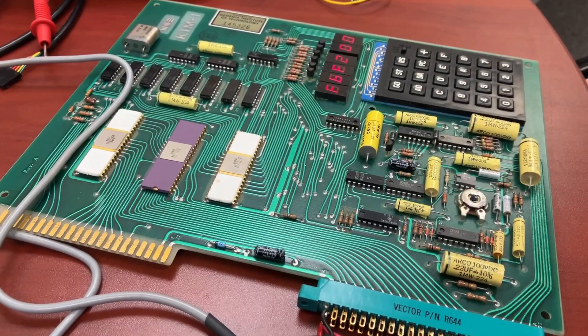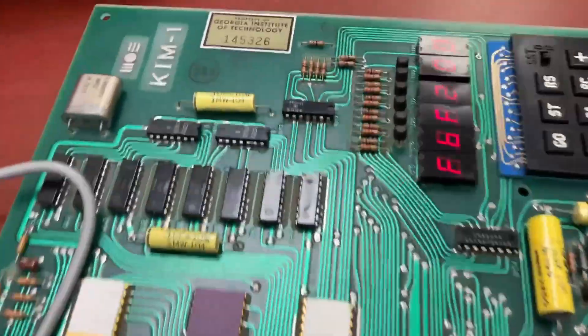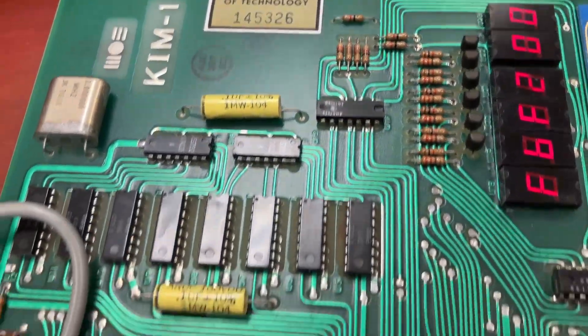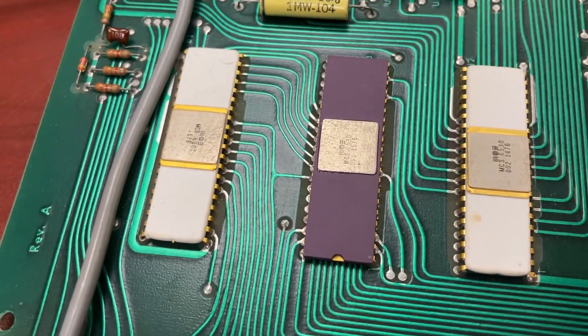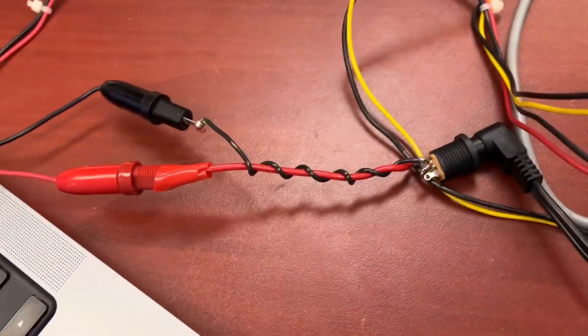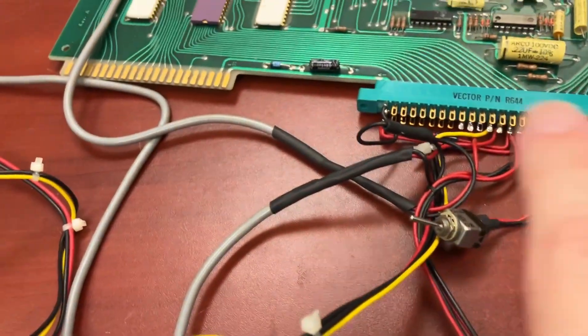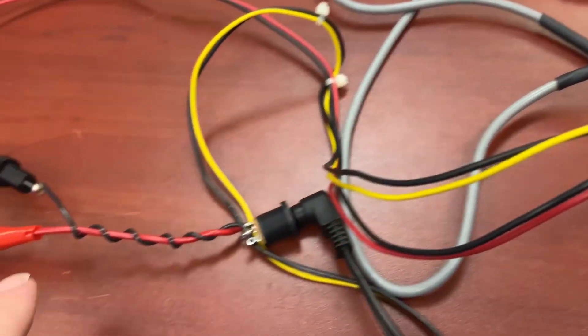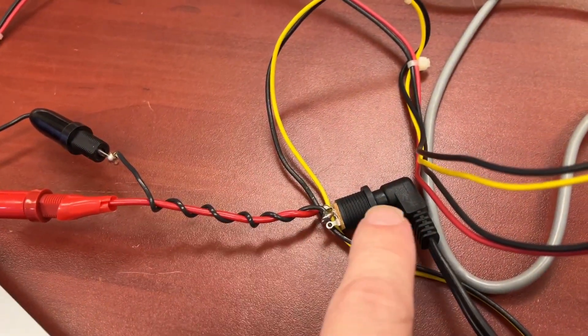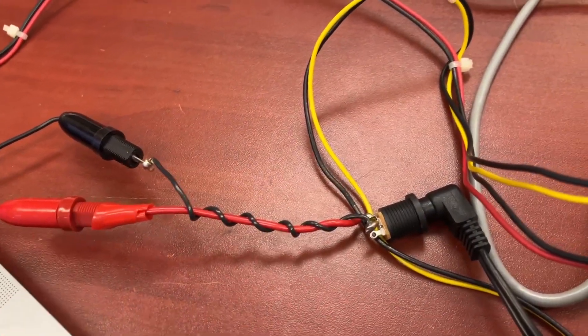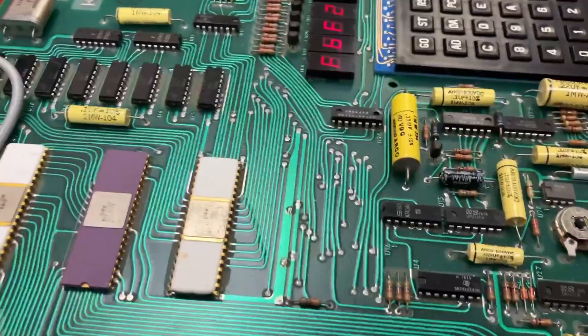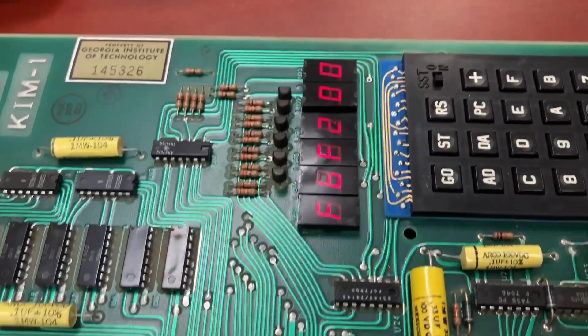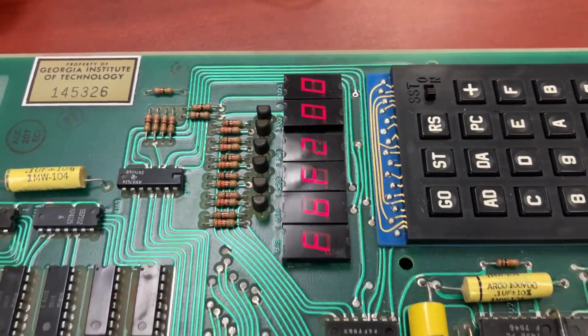So this is a Moss KIM-1 computer, Georgia Tech property, with a ceramic 6502 with a 1976 date code. And it came with a bunch of stuff already hooked to it. So my son made this little adapter so he could plug a barrel jack into the power supply. Yeah, we'll wrap that at some point. And it looks like it works! It just worked!